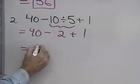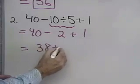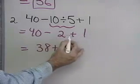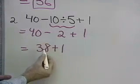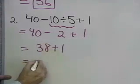40 subtract 2 is 38 plus 1. So I'm doing my subtraction and addition just left to right in the same direction that I read. And 38 plus 1 is 39.